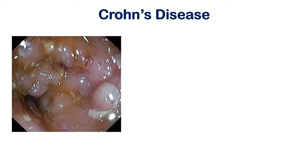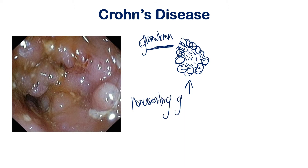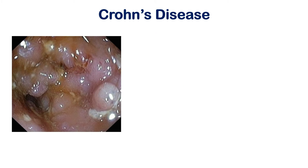Crohn's disease is also transmural granulomatous — meaning granulomas are present. A granuloma forms when epithelioid histiocytes, a type of macrophage, surround and box in an area of inflammation. In Crohn's disease you will find non-caseating granulomas — non-caseating means there is no necrosis within the center; everything inside is still alive, but a granuloma is still present.